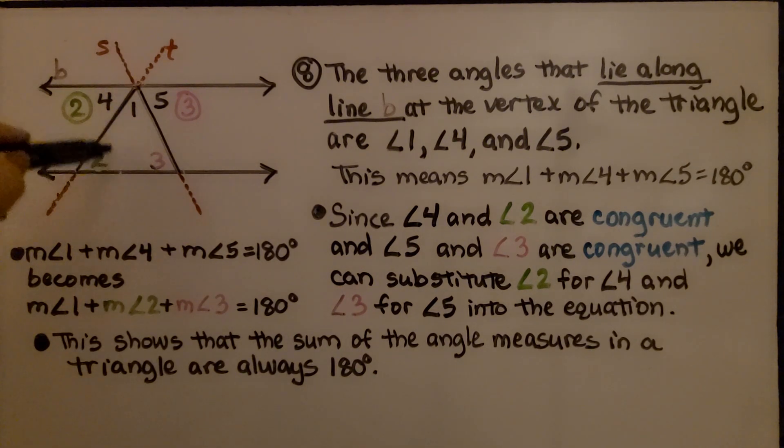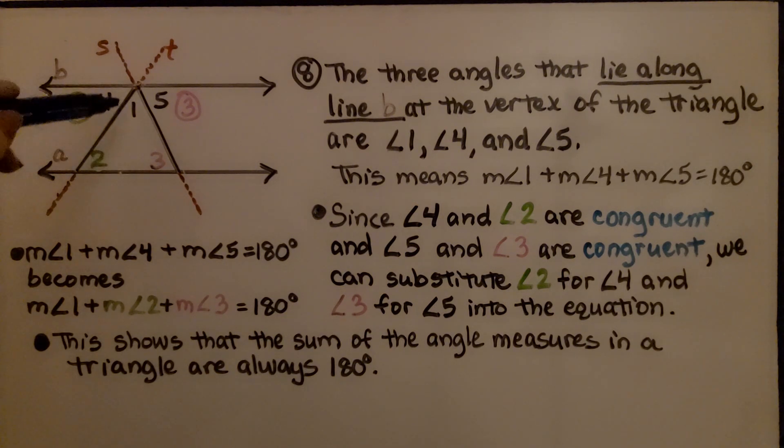And those are the angles of the triangle. If that's 180 degrees and they're congruent, then we know the interior angles of this triangle are 180 degrees.